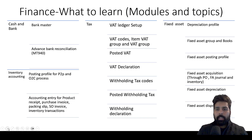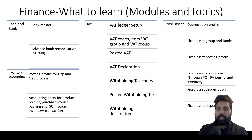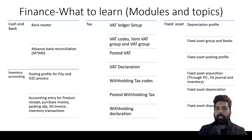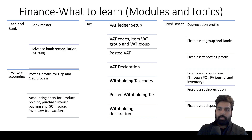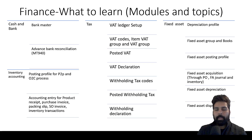Without tax, no finance process is complete in any implementation. So you should learn about VAT and the overall tax setup. It's a localization topic — every country may differ — but there is a global configuration available to start with. You can also learn Fixed Assets: depreciation profile, groups, books, posting profile, and how the fixed asset cycle works from acquisition through depreciation to disposal. You could initially restrict yourself to Cash and Bank, Tax, AP, AR, and General Ledger, then add Fixed Assets — but learning it is a good start.